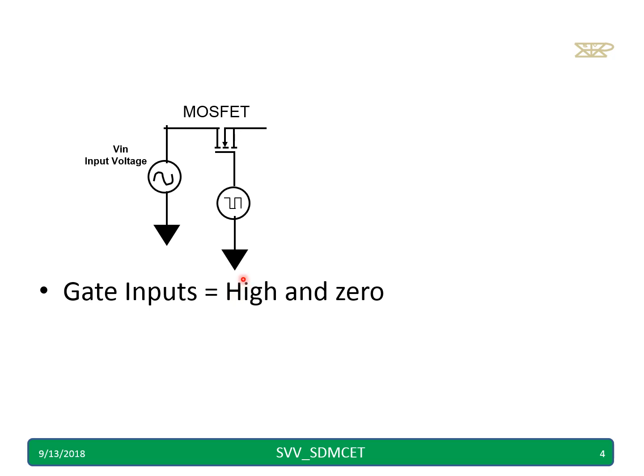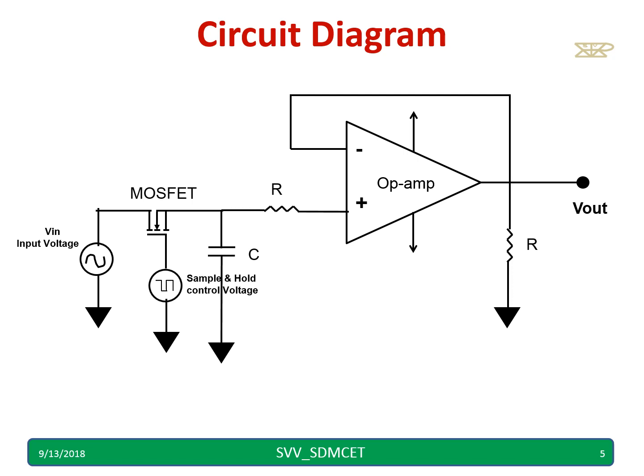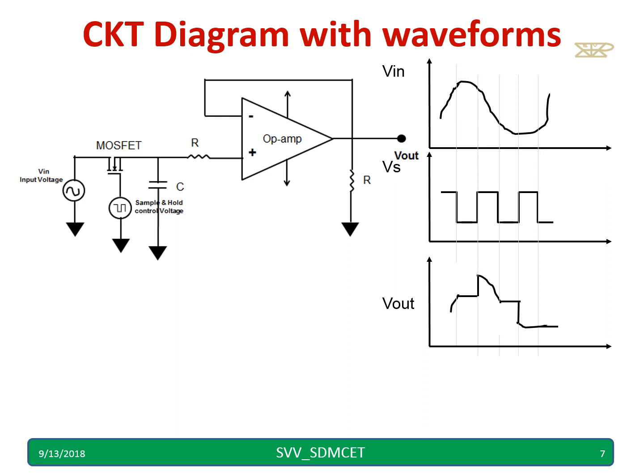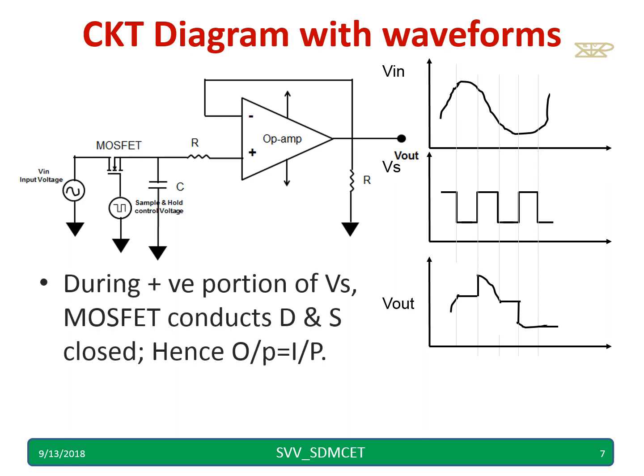Now gate input is changing high and zero. This is a complete circuit diagram. We can pause and note down for sample and hold circuit. It samples and holds the value till it samples again. The working is very simple. MOSFET works like a switch. Whenever it is high it is a short circuit, whenever it is zero this is an open circuit. C is used as a storage element. Vs is the sample and hold control voltage. The circuit diagram with the waveform is shown in this slide.